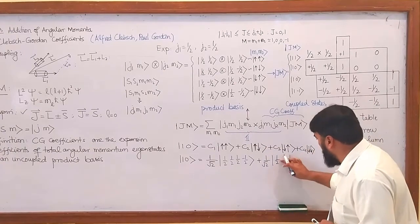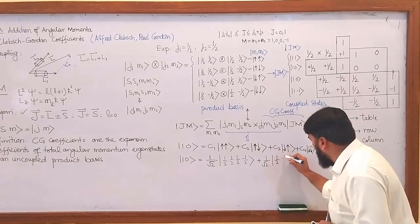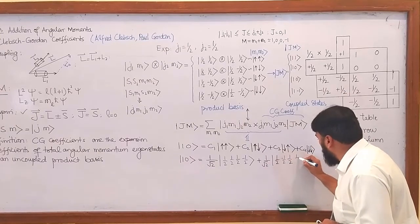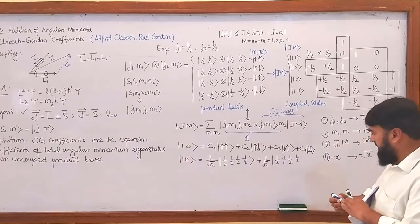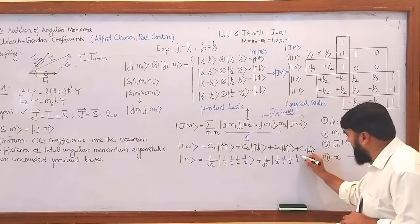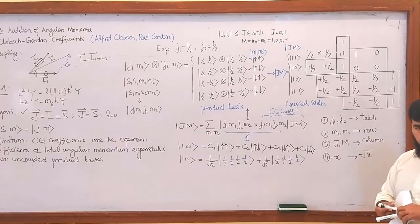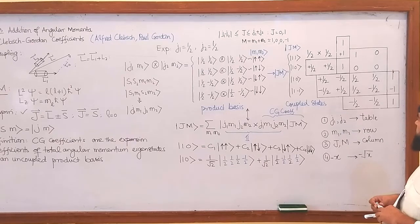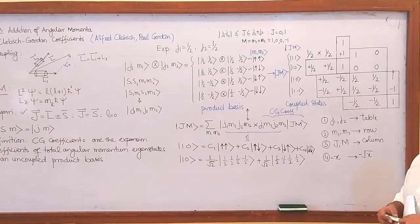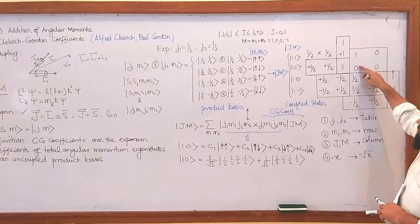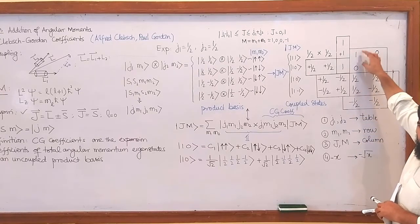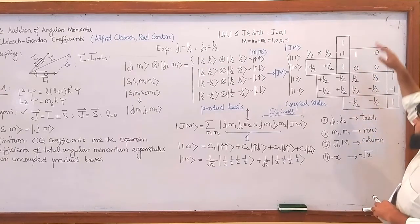I will write again with another color. So minus half and plus half. Is there any other possibility? There is not a possibility. The |1,0⟩ is the coupled state.